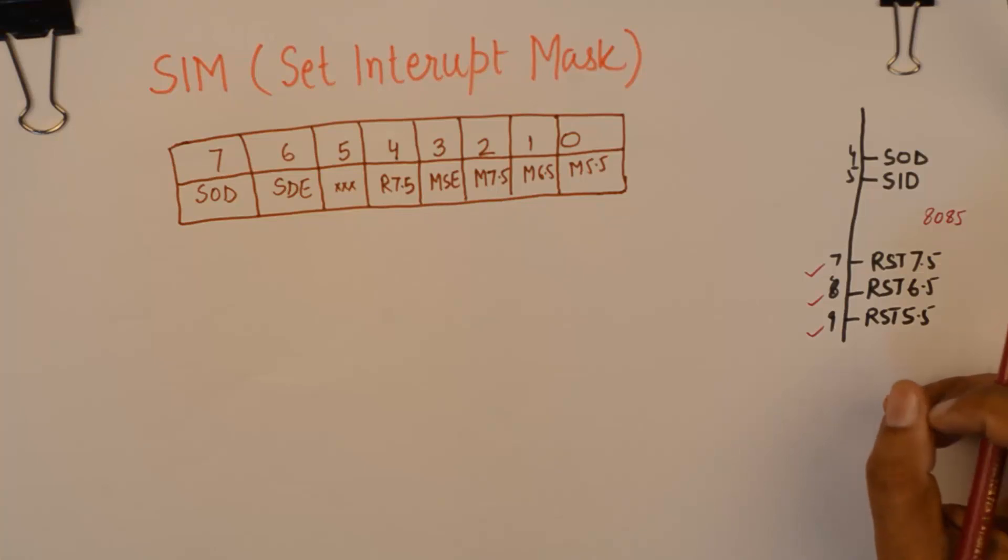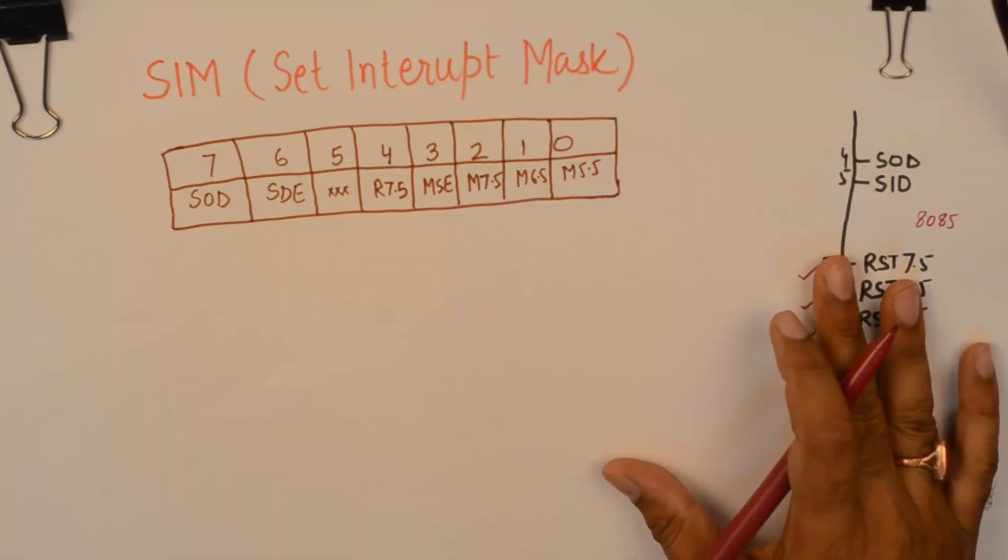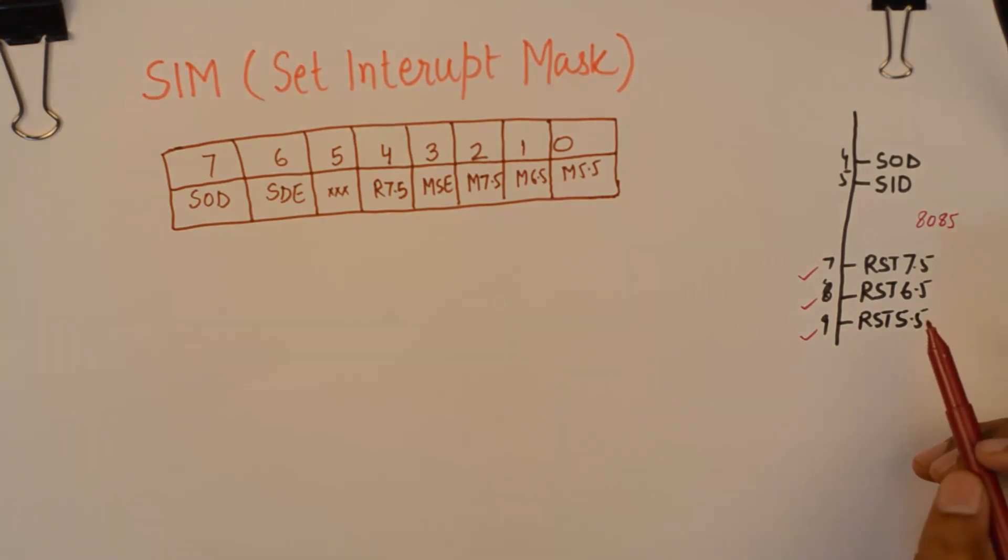a program in which you do not wish to be interrupted by these interrupts or more specifically if you do not wish to be interrupted by any one of these or any two of these interrupts, then you have the ability to mask each one of them or two of them or all three of them using set interrupt mask.